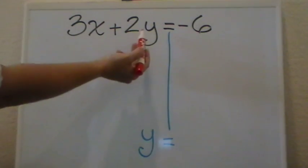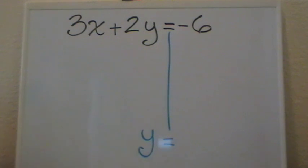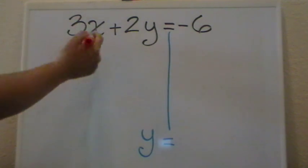Now, in this case, since y is the variable that we want to leave alone or we want to isolate, what we are going to start by is canceling the 3x.